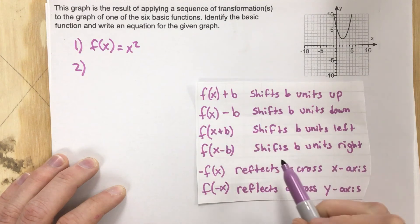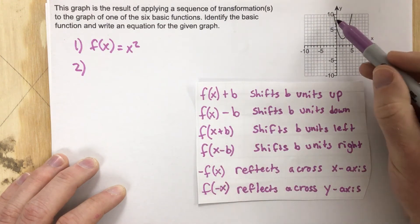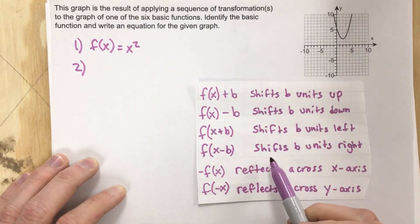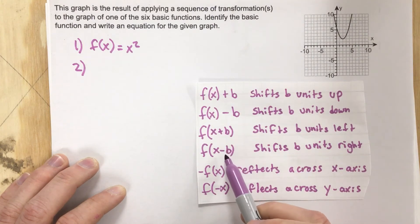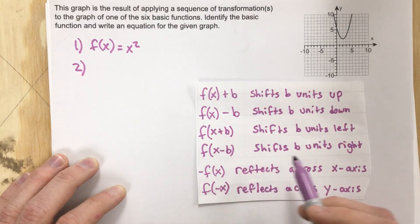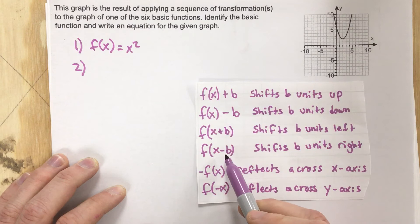And we need to look for what we need to do to shift this parabola to the right. You can see that it shifts b units right. To shift b units right it says that we need to subtract from the x value.